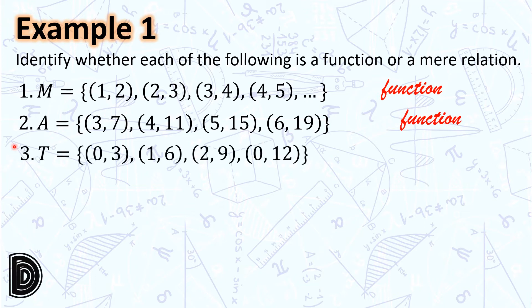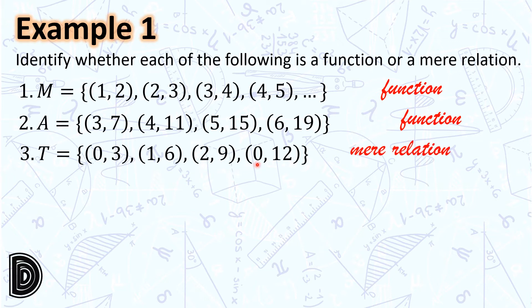Number 3: Set T is the set of ordered pairs (0,3), (1,6), (2,9), (0,12). Notice that 0 as a value of x is related to more than one value of y — (0,3) and (0,12). In another way, we see it as the value of x is repeated. Hence, number 3 is a mere relation.